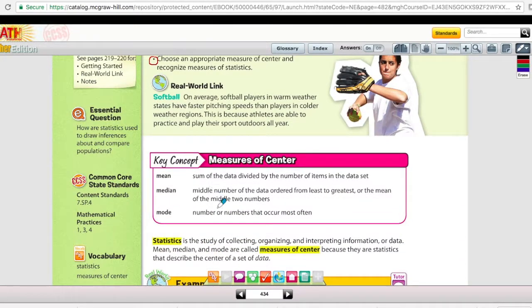In the middle of the page, you have your definitions of mean, median, and mode. Just remember to familiarize yourself with those definitions. And then the vocabulary words you have to write down are statistics, the study of collecting, organizing, and interpreting information or data, and then measures of center. So mean, median, and mode are called measures of center, or you might also know them as measures of central tendency.